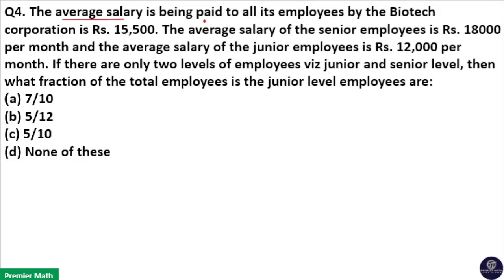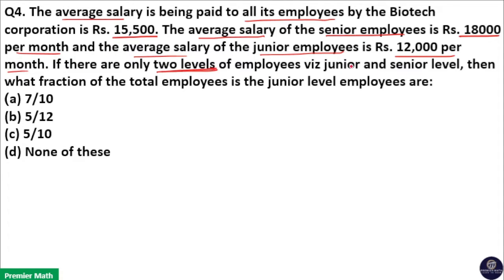The average salary paid to all employees by Biotech Corporation is 15,500. The average salary of senior employees is 18,000 per month and the average salary of junior employees is 12,000 per month. If there are only two levels of employees — junior and senior — what fraction of total employees are junior level employees?